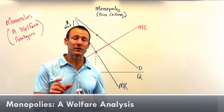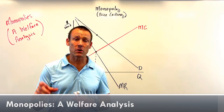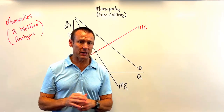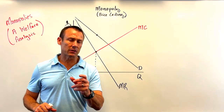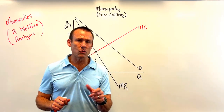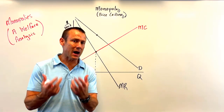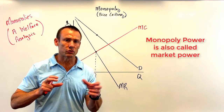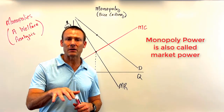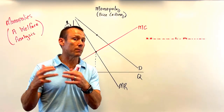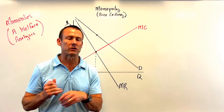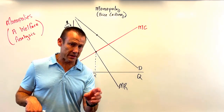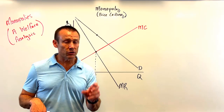In this video we're going to do a welfare analysis of a firm that has monopoly power. What we mean by monopoly power is market power — we use those two terms interchangeably. A firm with market power basically has a monopoly on the exact good that they are producing.